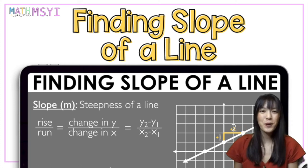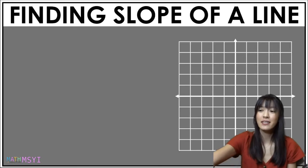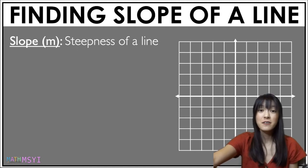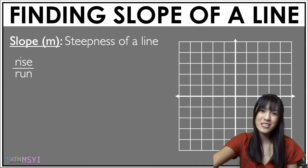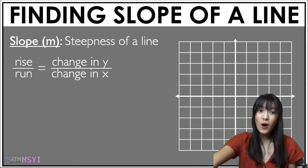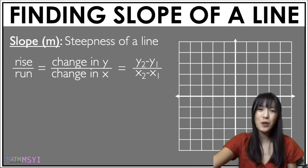Today we're going to look at how to find the slope of a line. Slope is the steepness of a line. To find your slope there are a few ways you can go about this: it's rise over run, or it's your change in y over change in x, or if you have the points you can do y2 minus y1 over x2 minus x1.